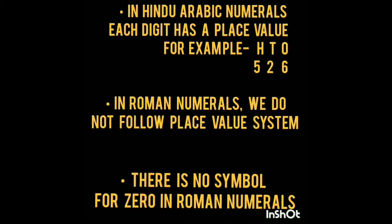In Hindu-Arabic system, each digit has a place value. For example, in 526, 6 has place value ones, 2 at tens, and 5 at hundreds. But in Roman numerals we do not follow the place value system, and there is no symbol for zero in Roman numerals.